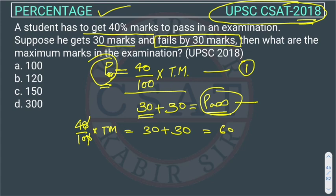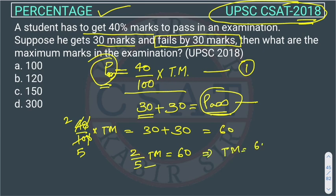Now this 0 cancels, we can divide — 4 and 100 simplify to give 2/5. So the equation becomes 2/5 × Total Marks = 60. Bringing 5 to the other side and dividing by 2: Total Marks = 60 × 5/2 = 30 × 5 = 150.